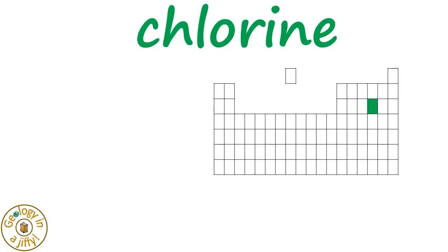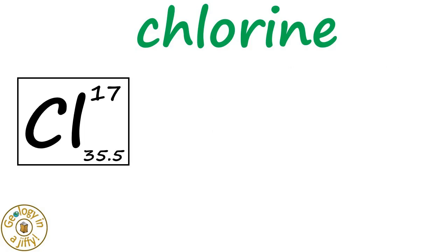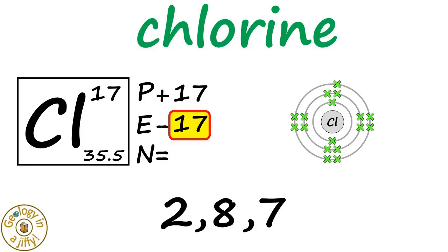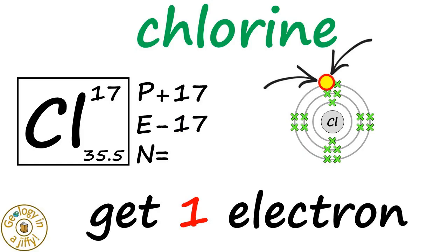Chlorine is found here on the periodic table. Knowing the atomic number is 17, there are 17 protons and therefore 17 electrons. The atomic structure has 17 positives in the nucleus and electrons arranged as 2, 8, 7. This gap in the outer shell means chlorine wants to gain one electron.